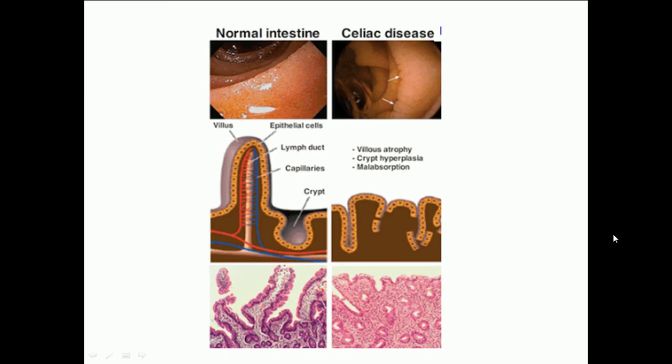This picture shows the normal intestines compared to the celiac intestines. As you can see, there is villus atrophy and crypt hyperplasia, which causes malabsorption of nutrients.